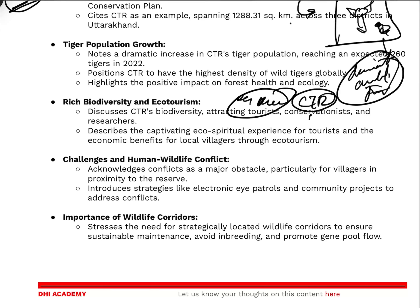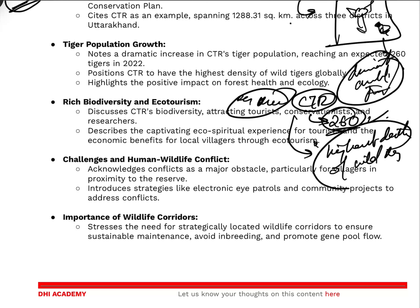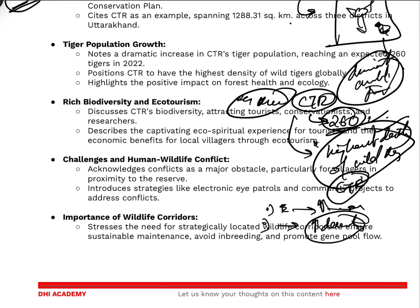Especially in Corbett Tiger Reserve, around 260 tigers have been found. One dominant fact for PLIMS is that Corbett has the highest density of wild tigers globally. In PLIMS, questions are asked about which state or tiger reserve has the highest number of tigers and which has the highest density. When the question is about highest density, your answer should be Corbett Tiger Reserve. Which tiger reserve has the highest tiger population — let me know in the comments below.